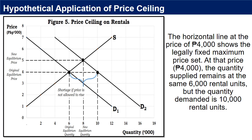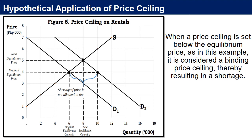In the graphs above, we saw what happens when a price ceiling for rent is imposed to keep the price at the original equilibrium of 4,000 pesos for a typical apartment. The horizontal line at the price of 4,000 pesos shows the legally fixed maximum price set. At that price, the quantity supplied remains at 6,000 rental units, but the quantity demanded is 10,000 rental units. One of the ironies of price ceilings is that while the price ceiling was intended to help renters, there are fewer apartments rented out under the price ceiling — 6,000 rental units — than would be the case at the market rent of 5,000 pesos with 8,000 rental units. When a price ceiling is set below the equilibrium price, it is considered a binding price ceiling, thereby resulting in a shortage.